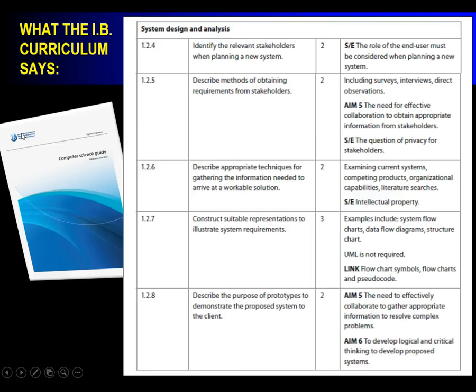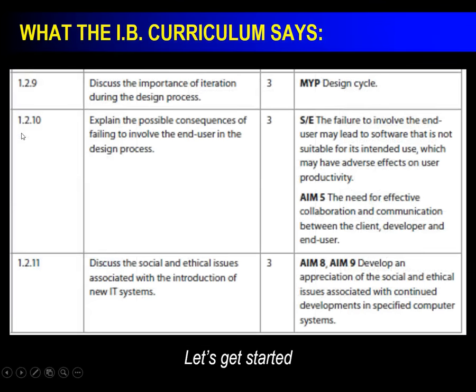The curriculum also requires you to construct suitable representations to illustrate system requirements — examples include system flowcharts, data flow charts, and structure charts. UMLs are not required, but you've seen what they look like. You should know a few flowchart symbols and possibly some pseudocode for the IB exam. You also need to describe the purpose of prototypes to demonstrate the proposed system to the client, and understand the importance of iteration through the design process. Iteration essentially means repeating — looping — sometimes you have to come back to where you started to redesign.